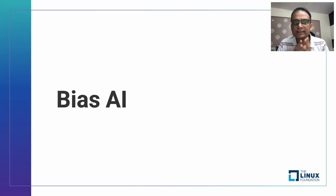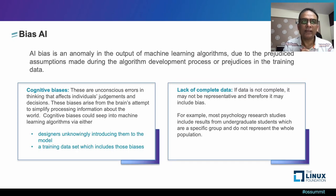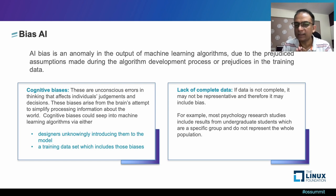Let's discuss biasing — how biases happen and whether they are intentional or unintentional, and how AI systems become biased with respect to several factors. AI bias is an anomaly in the output of machine learning algorithms due to prejudiced assumptions in the training data.